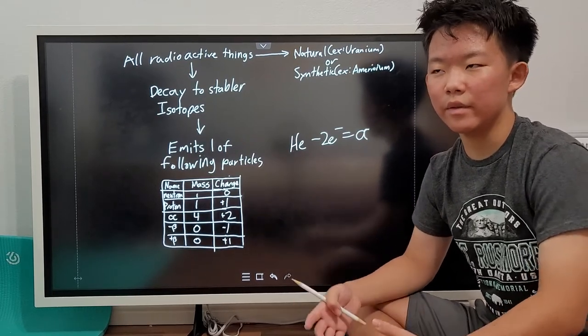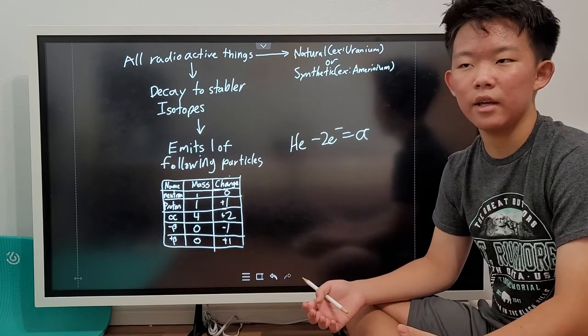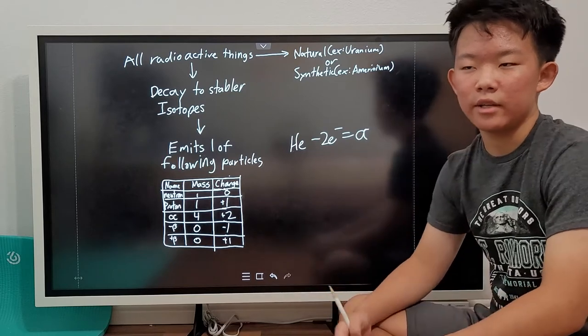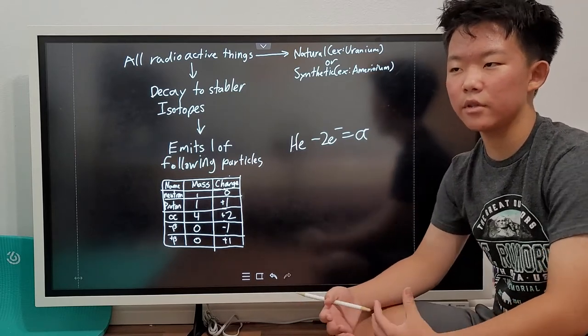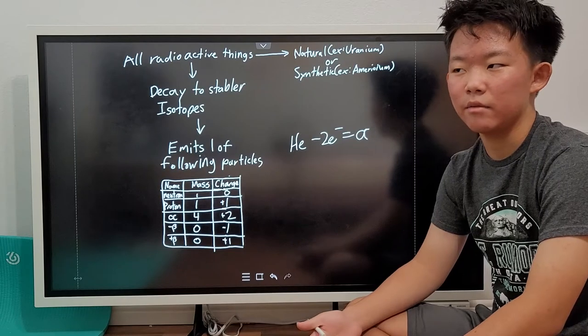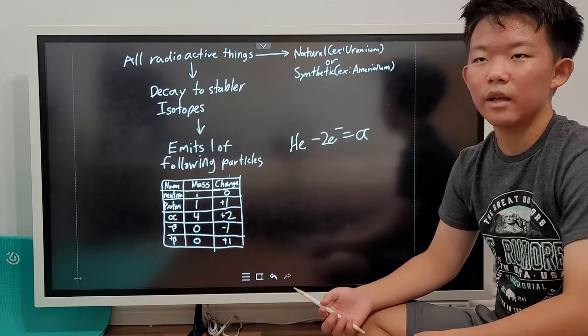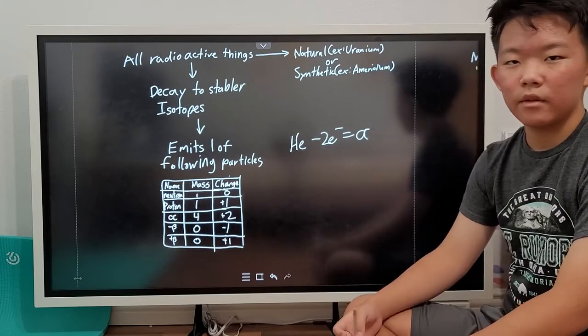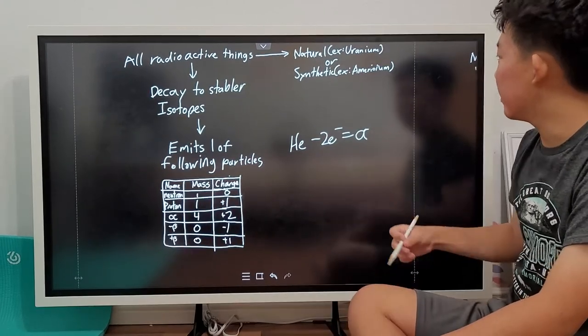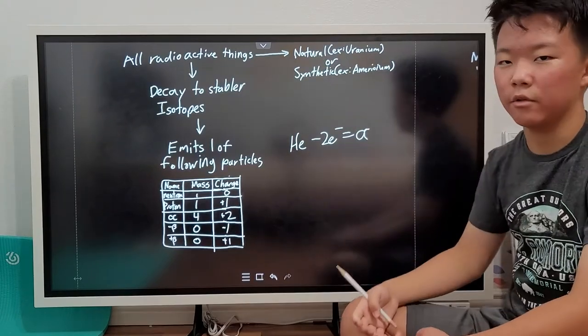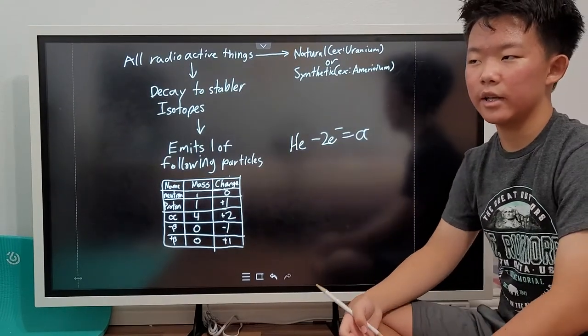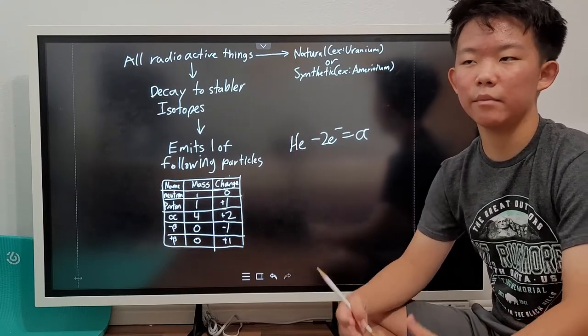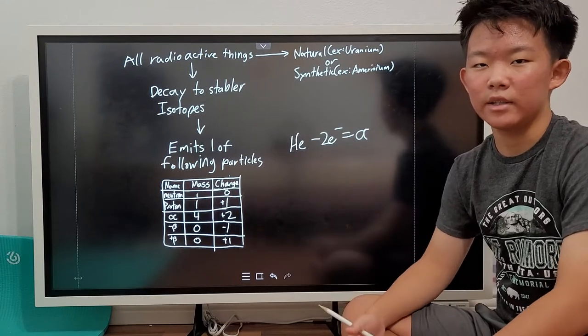Now, sometimes radioactive elements can either spontaneously decay, in other words, just split into two random atoms, or emit energy as X-rays or gamma rays. For those, you can never see what comes out, because X-rays and gamma rays don't have a specific mass or charge. Another thing about radioactive stuff is that they're either natural, like uranium or thorium, and others like americium or californium are synthetic. In other words, they're made in particle accelerators, and they never exist in nature.